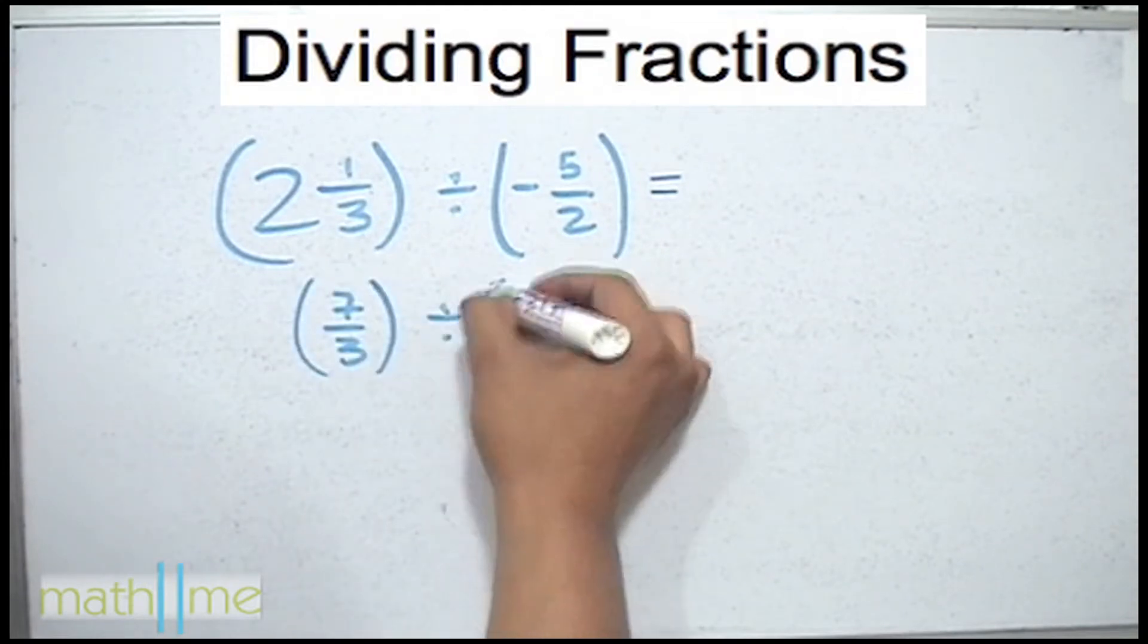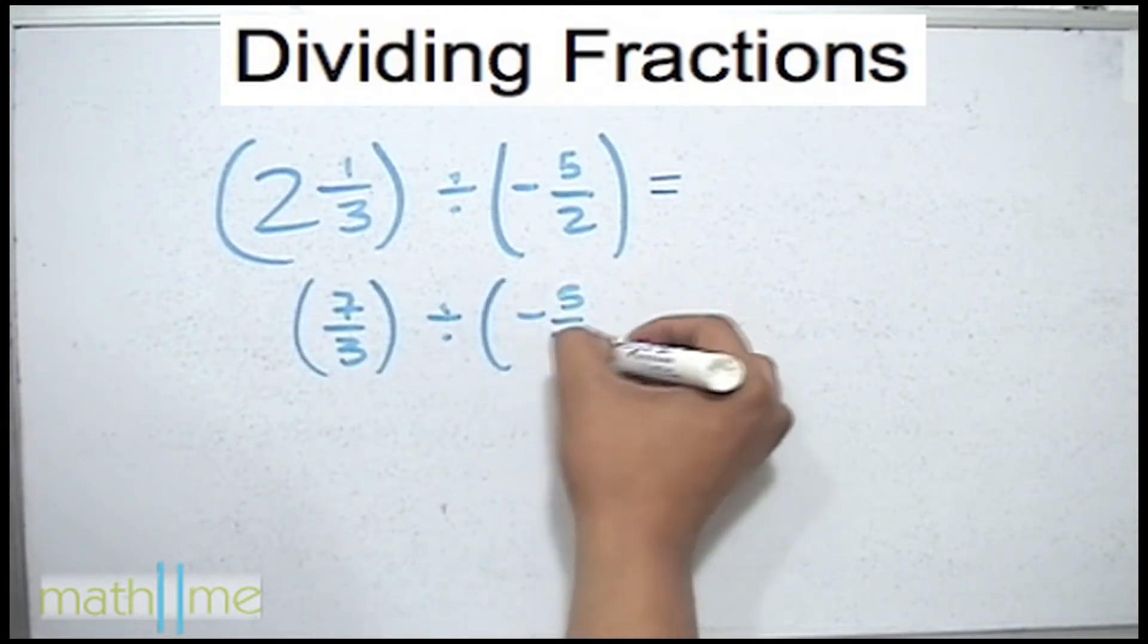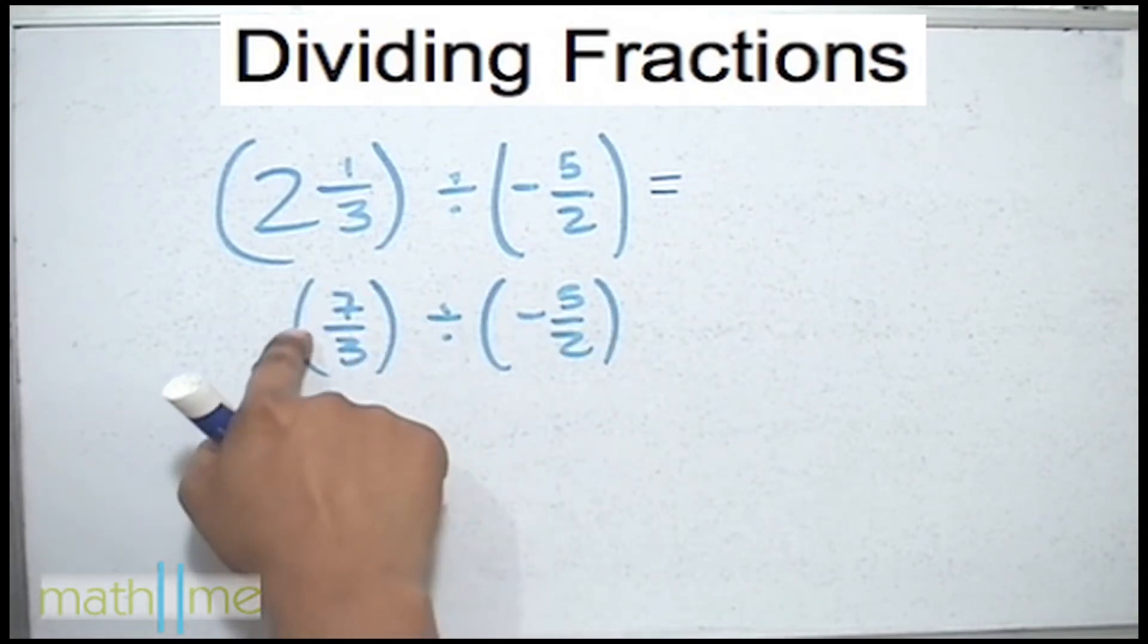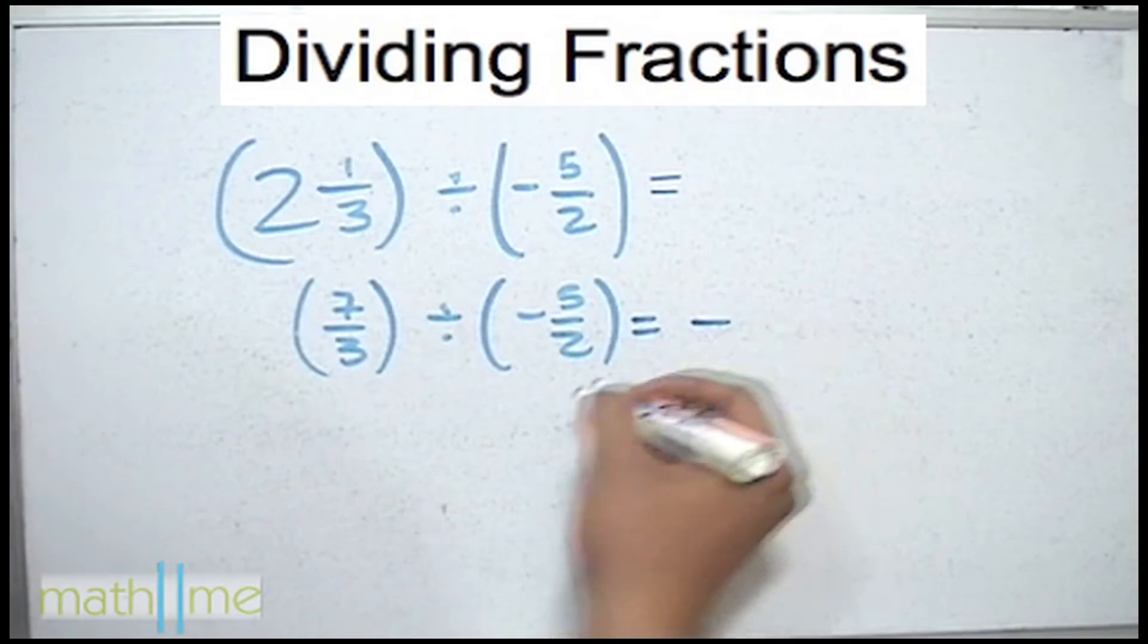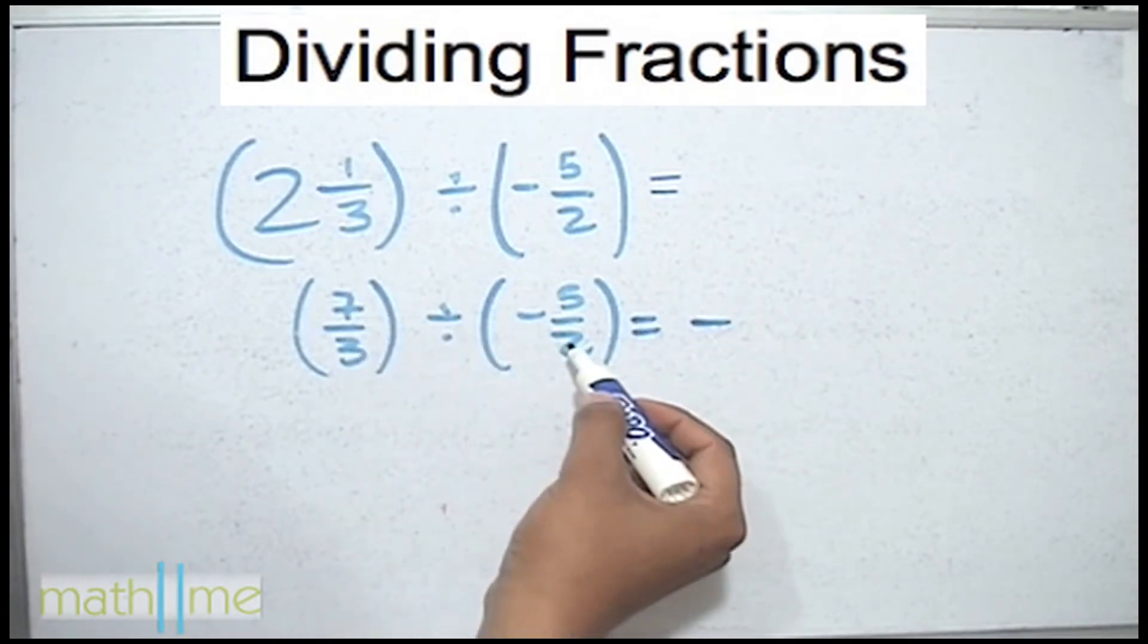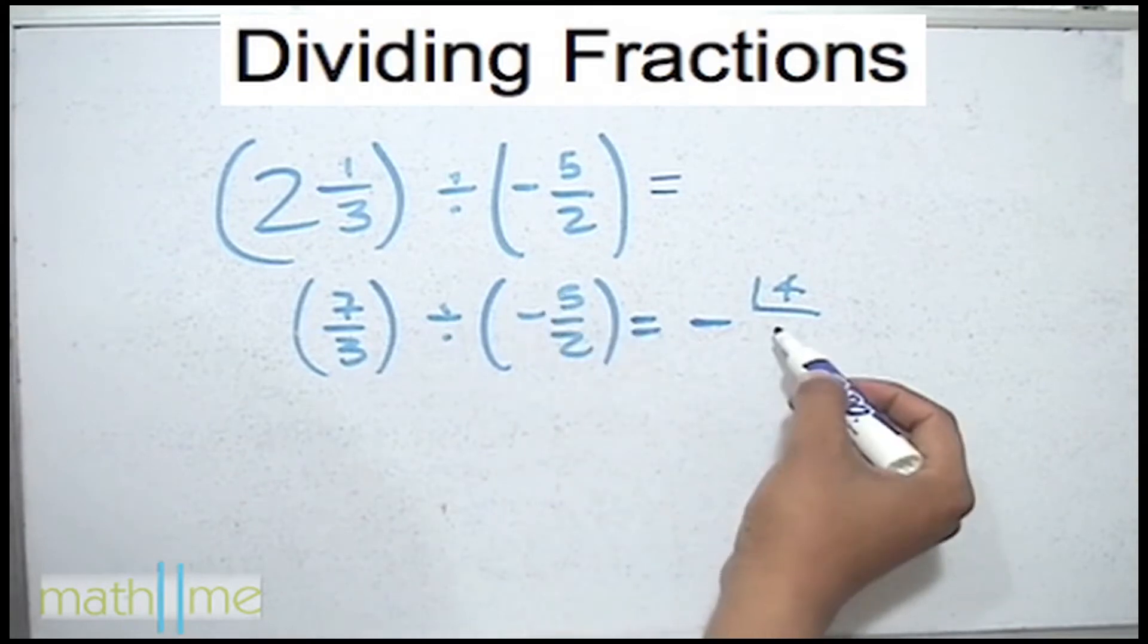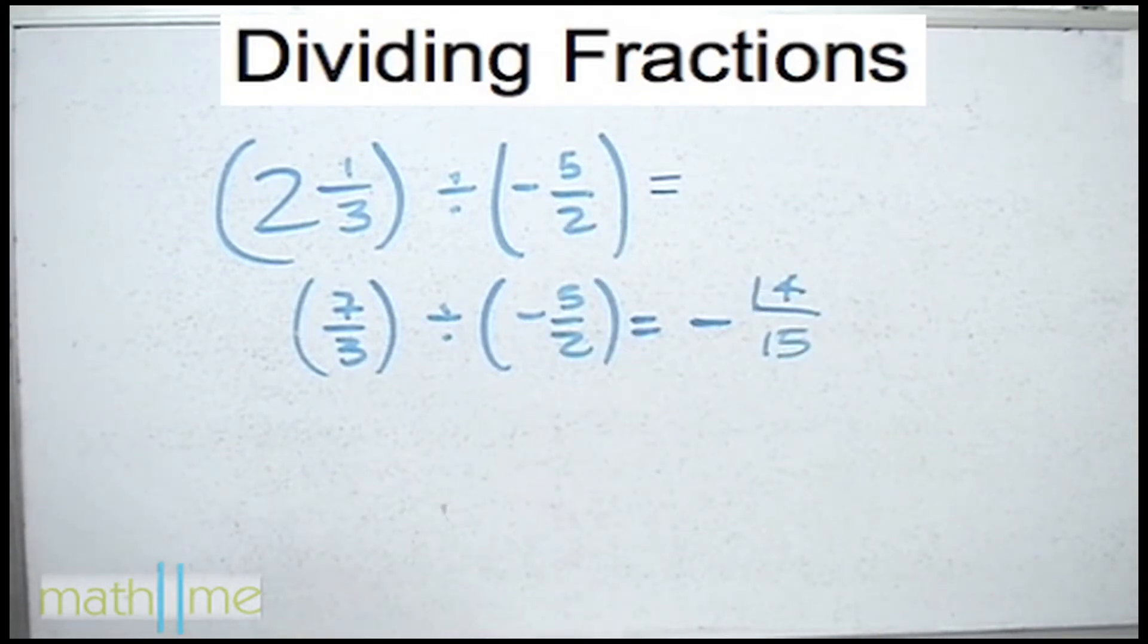Before doing this procedure multiply the signs so plus times minus equals minus. And 7 times 2 is 14 which we put up, then 3 times 5 gives 15 and we put it down. These are consecutive numbers which cannot be reduced so they are irreducible numbers and the exercise is done.